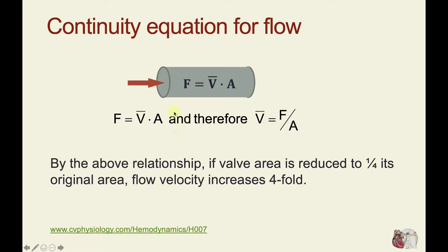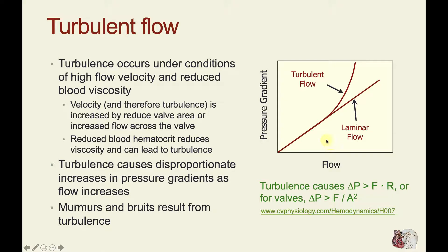We can rearrange this equation to see that mean velocity equals flow divided by cross-sectional area. By this relationship, if the valve area is reduced to one-fourth its original area, the flow velocity increases four-fold. This is important because increases in velocity can predispose to the formation of turbulent flow. Turbulence occurs under conditions of high flow velocity and can also occur under conditions of reduced blood viscosity. Velocity and therefore turbulence is increased by reduced valve area or increased flow, and reduced blood hematocrit reduces viscosity, which can also lead to turbulence.